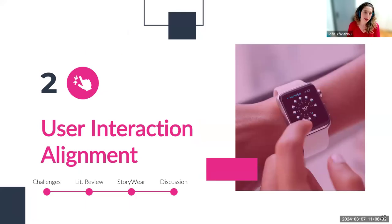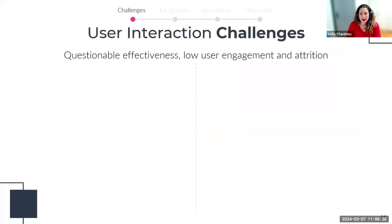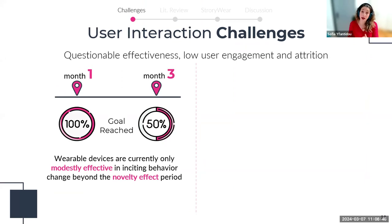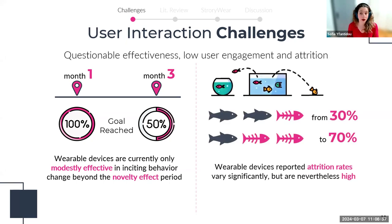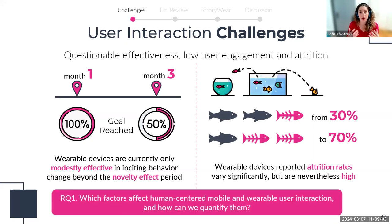First, we explore the user interaction alignment problem. Ubicomp technologies suffer from challenges regarding user interaction — wearable devices may claim to persuade you to get fitter, but meta-analyses report they are only modestly effective in inciting positive behavior change. Additionally, attrition or abandonment rates for wearable devices are significantly high. So our first question is: which factors affect human-centered mobile and wearable interaction, and how can we quantify them to better align ubicomp technologies with human needs and expectations?